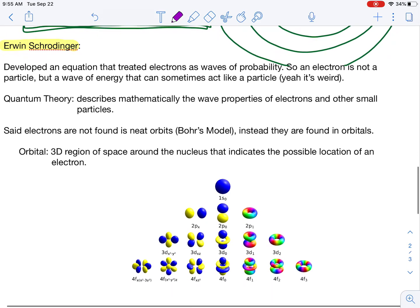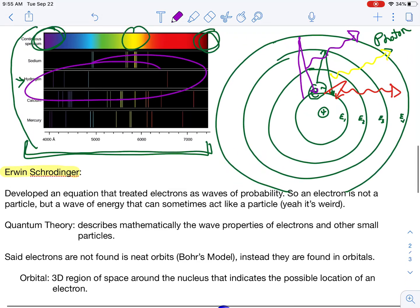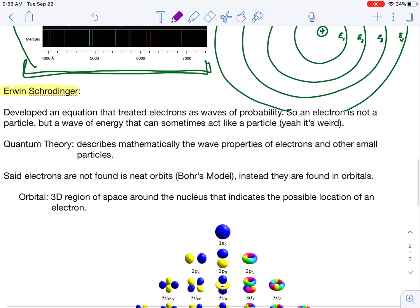Schrödinger expanded upon that idea even further. So he came up with a Schrödinger wave equation. You can Google it if you'd like. It's quite complex. We're not going to use it. But he said that the electron is even weirder than what we think. It doesn't even reside on these energy levels. The electron exists as a particle and a wave of probability, which is very weird. So sometimes it acts like a particle and sometimes it acts like a wave of energy. It's very complex. We'll get to that a little bit later.